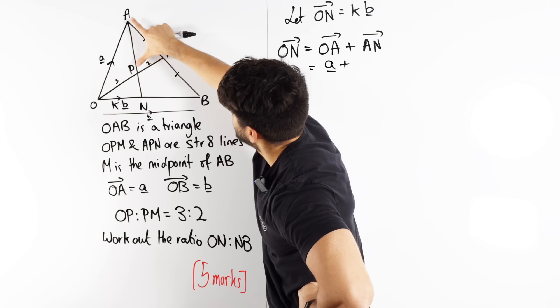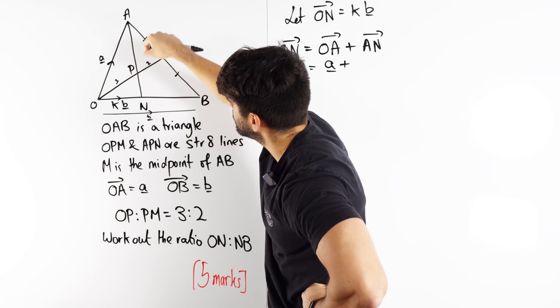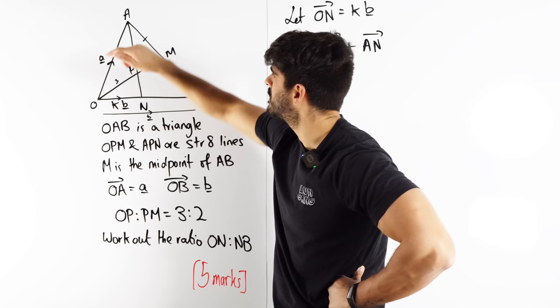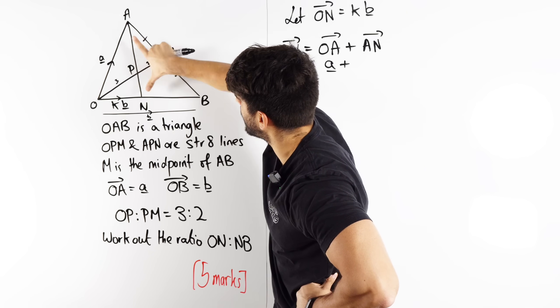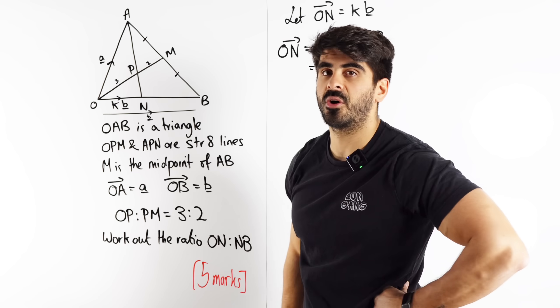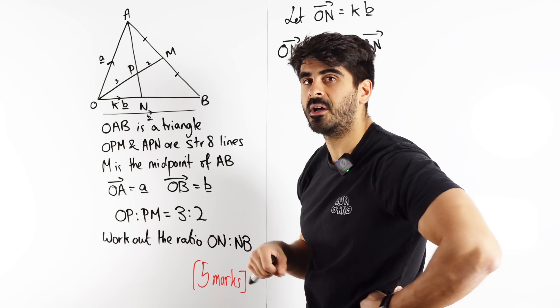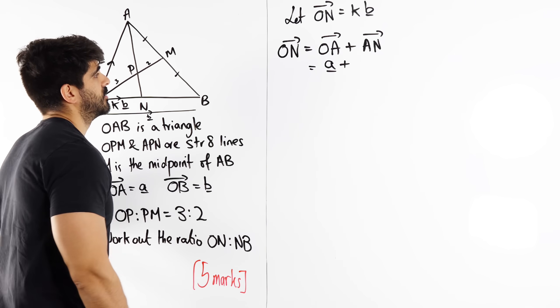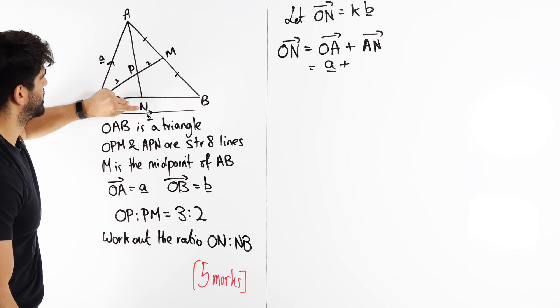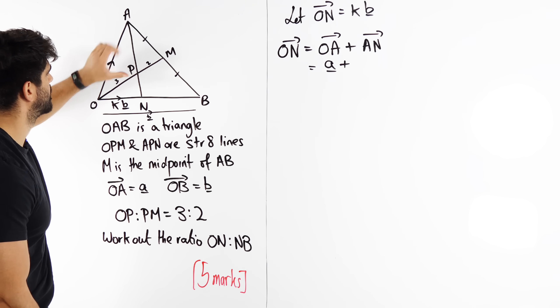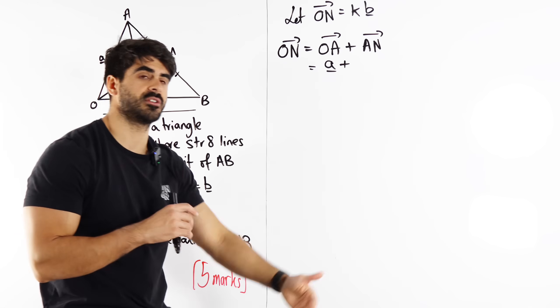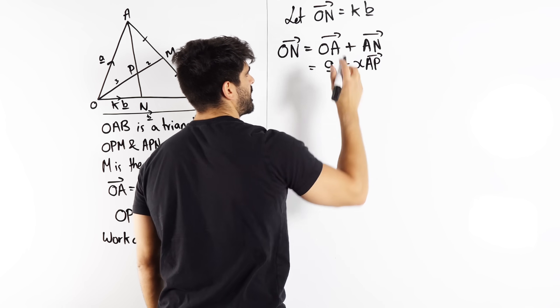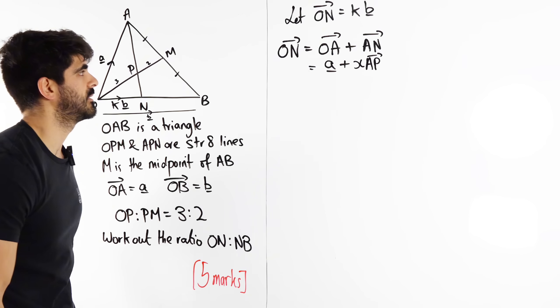So imagine we have A to P, do we double it? Do we double this vector to get AN? Is it 1.5 times bigger? So if we take this, if we times it by 1.5, would it take us to N? We don't know. And here again, we have to give it an unknown multiple, an unknown multiplier. I'm going to call it X. So AN is X times bigger than AP, so it's an extension. So I'm going to take AP, I'm going to extend it by a factor of X, and that will take me to AN.